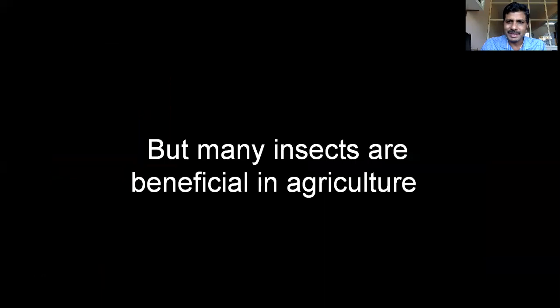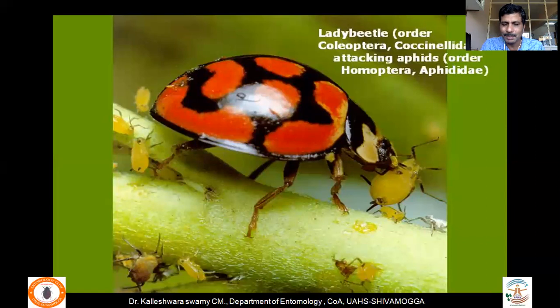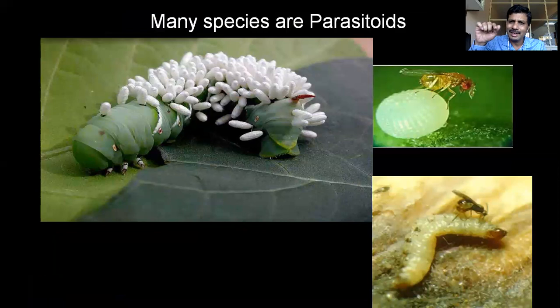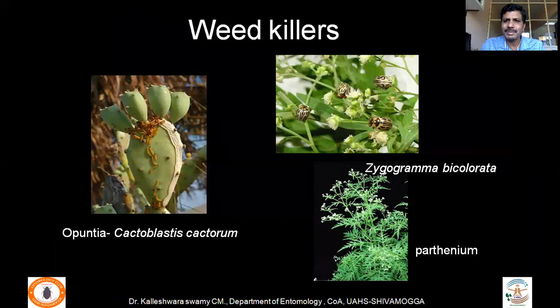Many insects are also beneficial in agriculture. Predators like the praying mantid and ladybird beetle feed on pests, keeping their populations under check naturally without the need for insecticides. Many insects are also parasites — they may lay eggs inside the eggs of other pests so those eggs won't hatch. Many are also weed killers; insects that feed on weeds like Parthenium keep weed populations under control, reducing the need for herbicides.